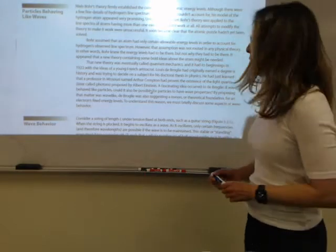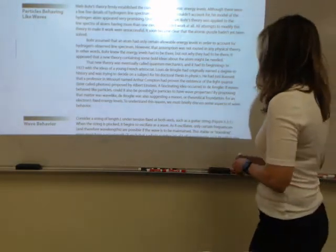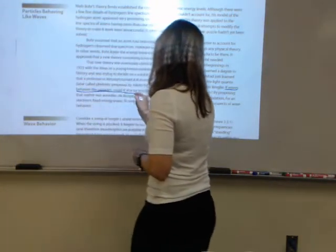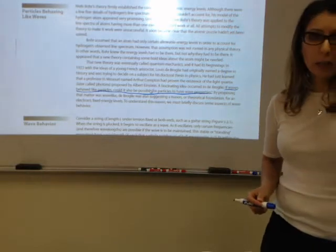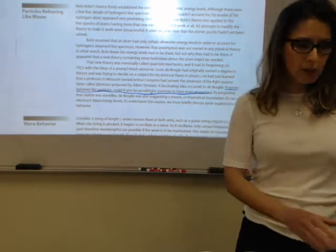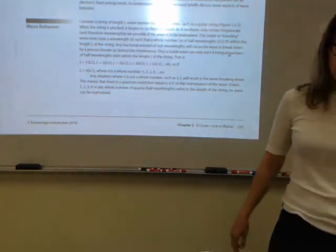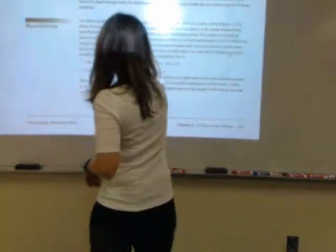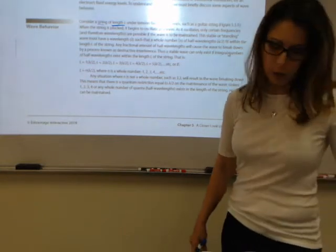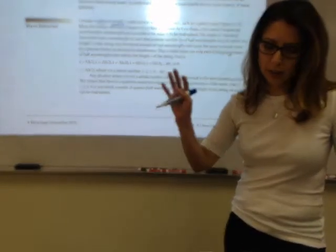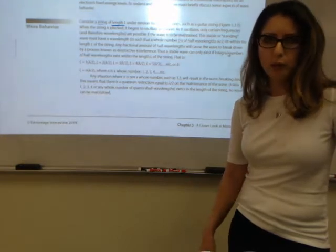Quantum mechanics had its beginnings in 1923. Louis de Broglie said that if waves behaved like particles, could it also be possible that particles had wave properties? And so he suggested a reason for all of the electrons' fixed energy levels. If we take a look at the next section called wave behavior, if we think of a string as having a length L, and it is fixed at both ends, kind of like a guitar string would be, if you pluck that string, then it's going to oscillate in waves. And there are only certain frequencies and wavelengths that are possible for that wave to be maintained.